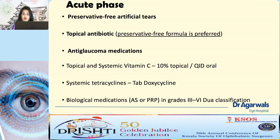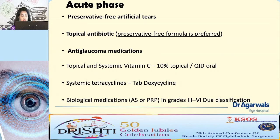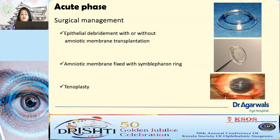Topical and systemic Vitamin C supplements are a very important part of treatment due to their pro-collagen activity. Topical 10% Vitamin C is preferred given two-hourly, and oral Vitamin C is mandatory four times a day for at least one to two months. This can be supplemented with systemic tetracycline such as doxycycline given twice daily for 15 to 20 days. Autologous serum or platelet-rich plasma can be used for Grade 4 and above chemical injuries.